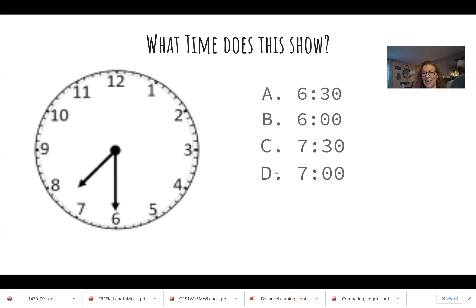Now look at this clock. What time does that show? The long hand is pointing to the six — that's the minute hand. And the hour hand, the short one, is a little bit past the seven. So is it A, 6:30? B, six o'clock? C, 7:30? Or D, seven o'clock? We know it's a 30, right? Because it's half past. Half past what hour — the six o'clock or the seven o'clock hour? It's a little bit past the seven. So it is 7:30. Which one says 7:30 — A, B, C, or D? It is C. Nice job. I knew you got this.